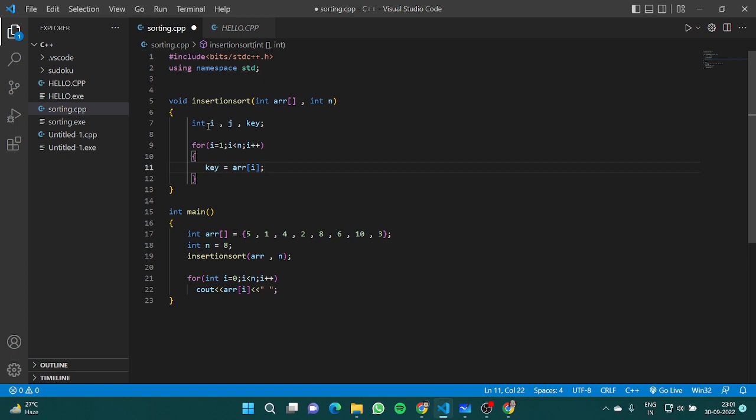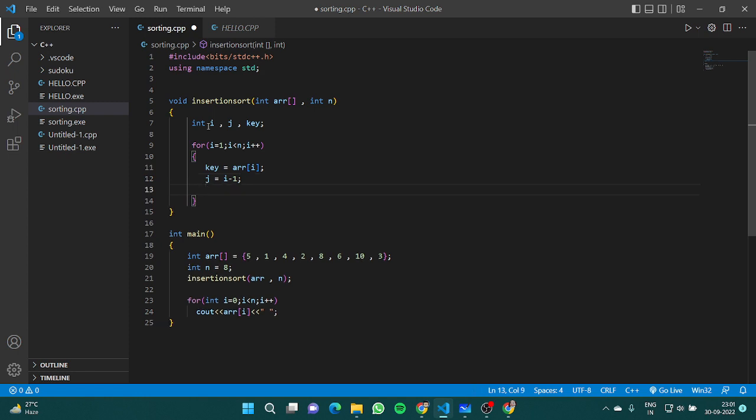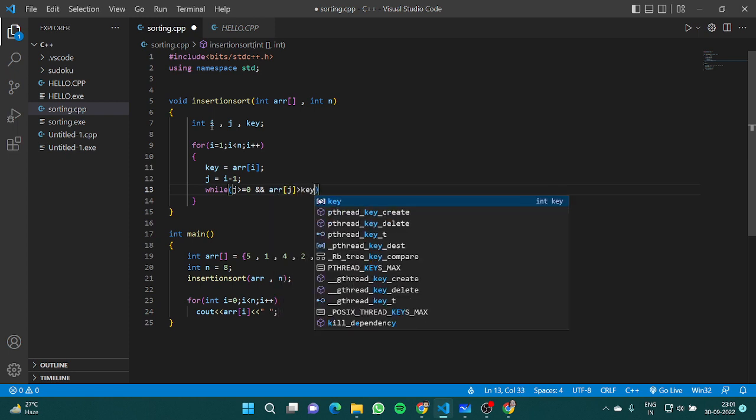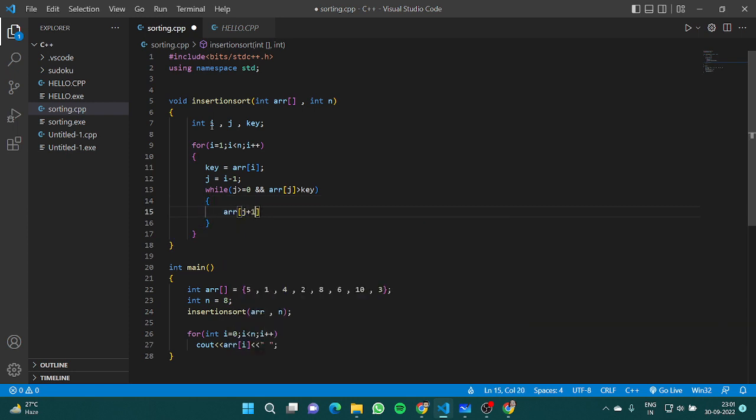We have j which will be equal to i minus 1 to indicate that the subarray before key is 0 to j. We have while j is greater than or equal to 0 and array[j] is greater than key, we will do array[j+1] equals array[j] and decrement j.